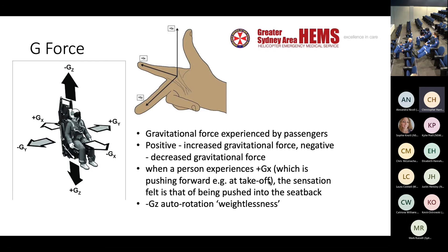GZ refers to the longitudinal axis of the human body. I asked the pilots yesterday and my understanding is that it's relevant to the body rather than to the aircraft. So GZ is the longitudinal axis of the human body.